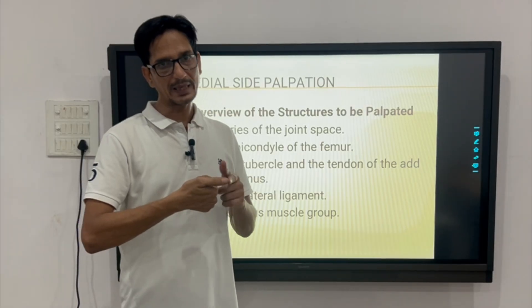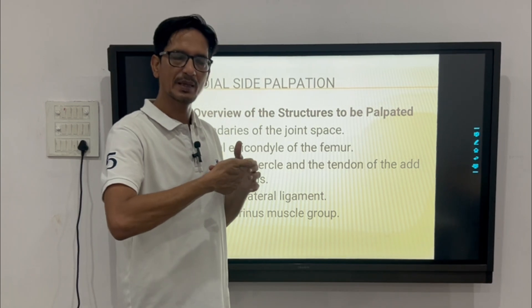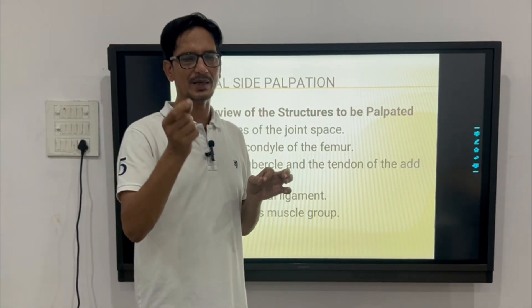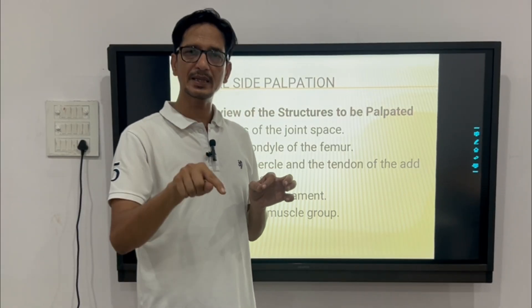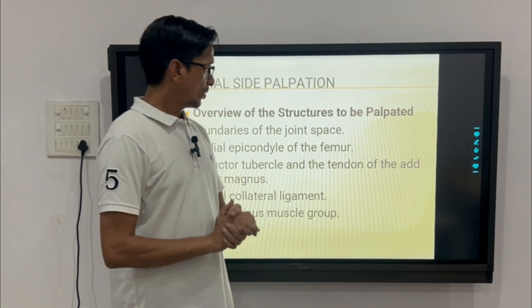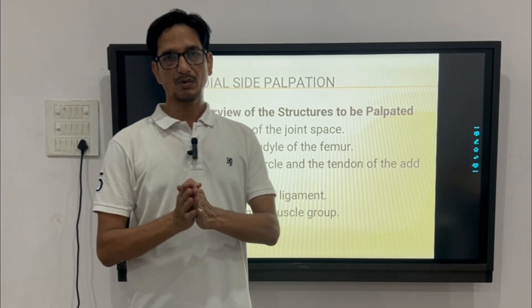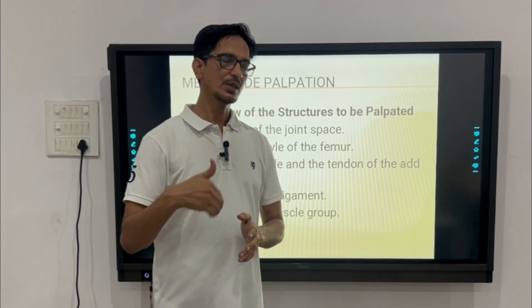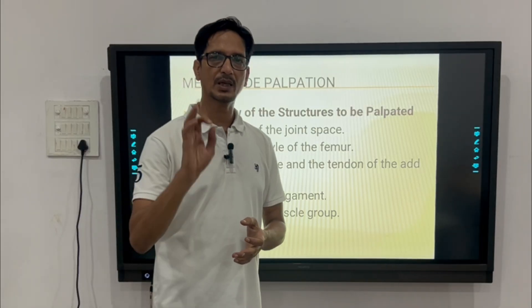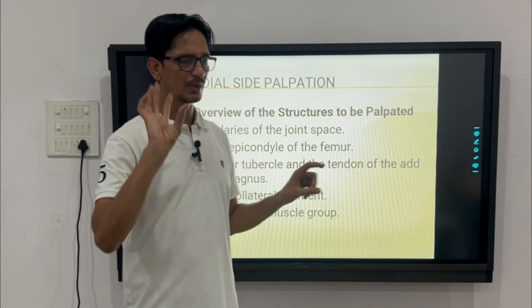As you slide your thumb pad medially, your thumb pad will push up and come outside of that gap. You will feel an elastic consistency as you slide your thumb pad toward the medial side, and ultimately your thumb pad will slide over an elastic structure. Basically, this is the location of your medial patellotibial ligament. For confirmation and exact localization, we will discuss this further.